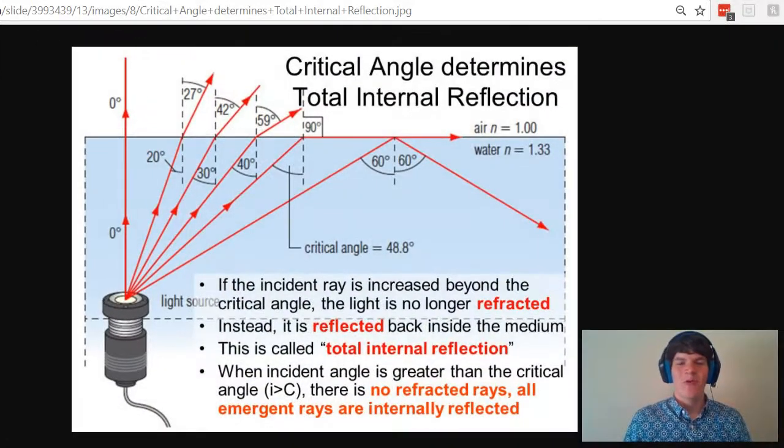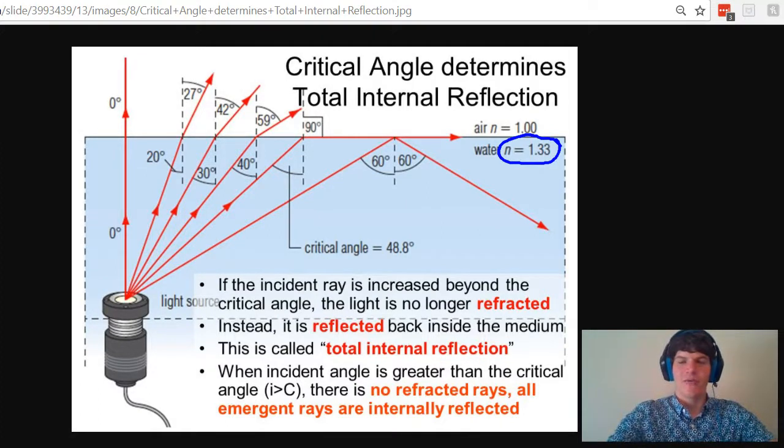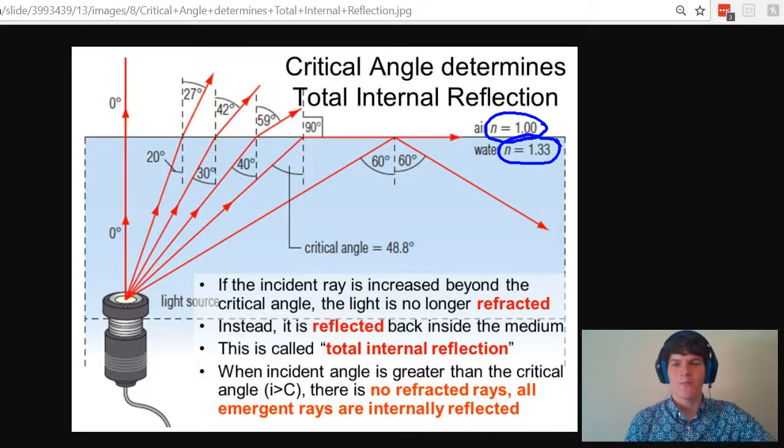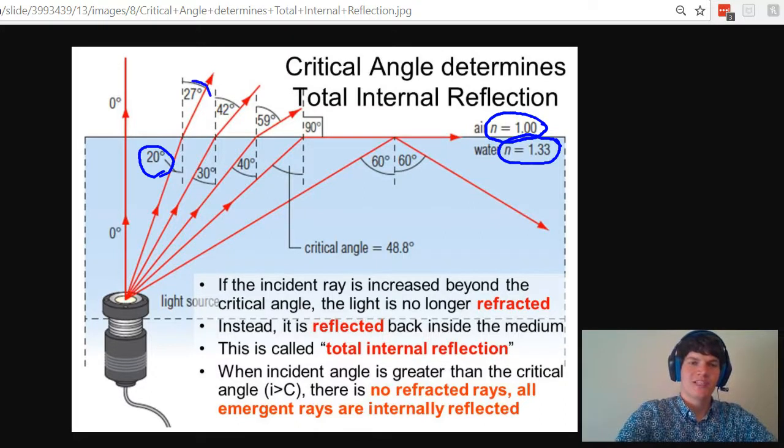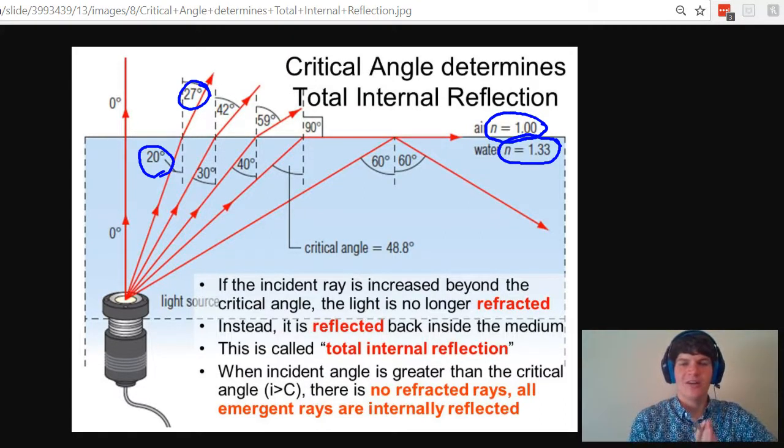As seen here, when light goes from a high index of refraction, in this case water with an index of refraction of 1.33, into something with a lower index of refraction such as air with an index of refraction of 1.00, you're going to notice that the angle increases. So as it transitions from the higher index of refraction to the lower index of refraction, we see the light bend away from the normal line.